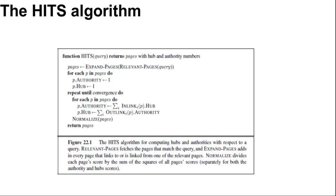As with PageRank, we iterate a process that updates the authority score of a page to be the sum of the hub scores of the pages that point to it, and the hub score to be the sum of the authority scores of the pages it points to. If we normalize the scores and repeat k times, the process will converge. Both PageRank and HITS have played important roles in developing our understanding of web information retrieval, and these algorithms and their extensions are used in ranking billions of queries daily.